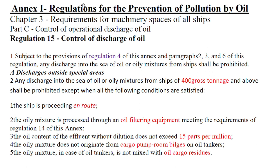Annex 1, as you all know, covers regulations for the prevention of pollution by oil — sometimes they ask you the full name of the annex. These discharge criteria come under Chapter 3, 'Requirements for Machinery Space of All Ships,' Part C, 'Control of Operational Discharge of Oil.' The key regulation to remember is Regulation 15: Control of Discharge of Oil.